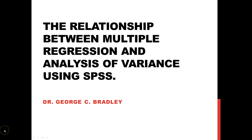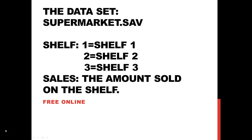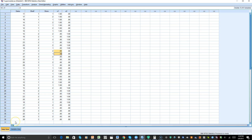Let's take a look at today's data set: supermarket.sav. The independent variable is 'shelf' and it has three groups — shelf 1, shelf 2, and shelf 3 — and the dependent or criterion variable is 'sales,' the amount sold on that shelf. Let's take a look at this data set in SPSS.